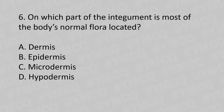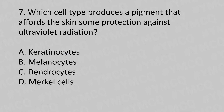Question 6: On which part of the integument is most of the body's normal flora located? Option A: dermis. Option B: epidermis. Option C: microdermis. Option D: hypodermis. The answer is Option B: epidermis.